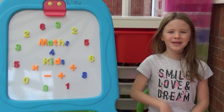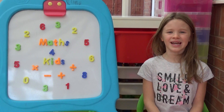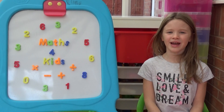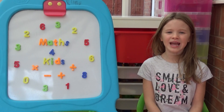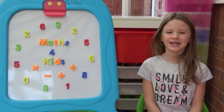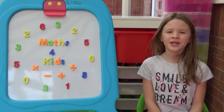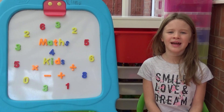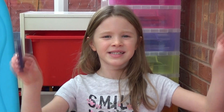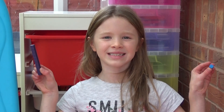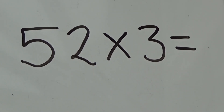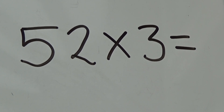Hi everyone, I'm Amber and today I'm going to show you how to multiply a two-digit number by a one-digit number using the grid method. I'm going to use Deans to help me. I'm going to look at 52 multiplied by 3.